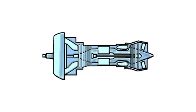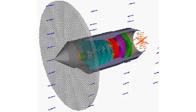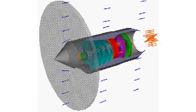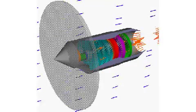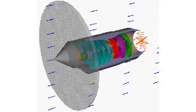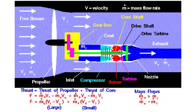Turboprop engines: Many low-speed transport and small aircraft use turboprop engines. Turboprop engines use a gas turbine core to turn the propeller. The core is similar to the turbojet or turbofan engine. The difference is that instead of expanding all the gases through the nozzle to produce thrust, most of the energy is used to drive the turbine, which then turns the drive shaft that rotates the propeller. The exhaust velocity of a turboprop is low and contributes little thrust because most of the energy of the core exhaust has gone into turning the drive shaft.